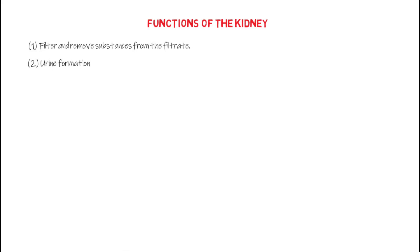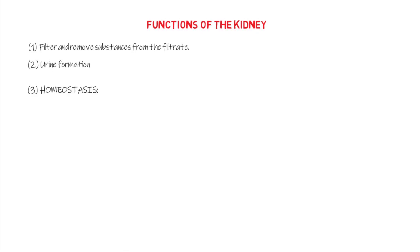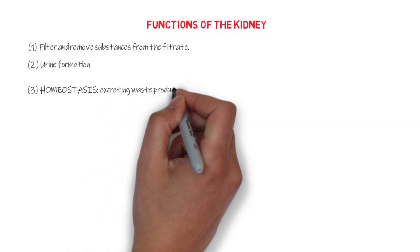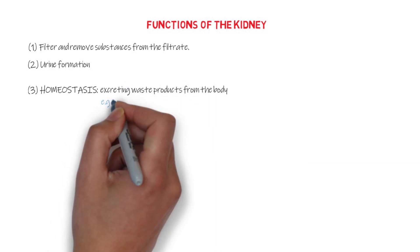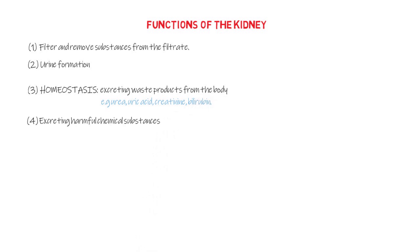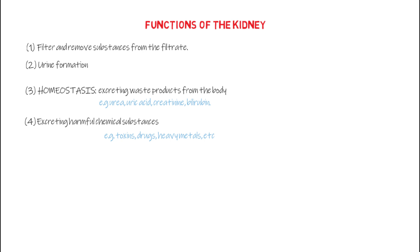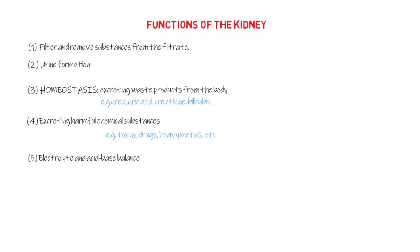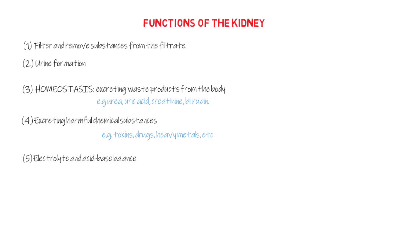The kidneys function by filtering plasma, removing substances from the filtrate depending on the needs of our body. Aside from formation of urine, the kidneys play vital roles in the body such as homeostasis by excreting waste products like urea, uric acid, creatinine, bilirubin, and also by excreting harmful chemical substances such as toxins, drugs, heavy metals, and the rest of them.